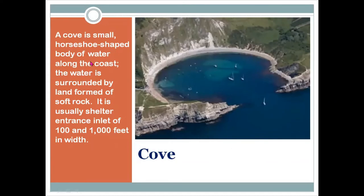We have another one called the cove. A cove is a small horseshoe-shaped body of water along the coast. It is a coastal feature that looks like a horseshoe and is very close to the coast. The water is surrounded by land formed of soft rock. A cove is usually used as a sheltered entrance or inlet, ranging from about a hundred to a thousand feet in width, where ships can come in. You can see in the image this horseshoe-shaped body of water along the coast — that is the cove.